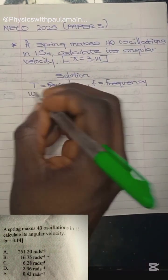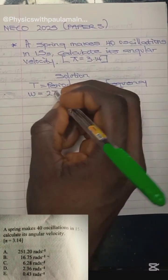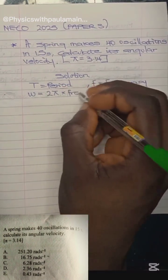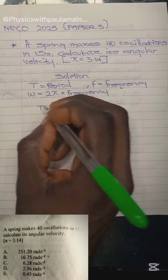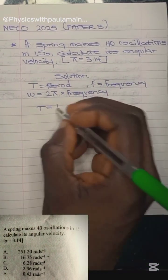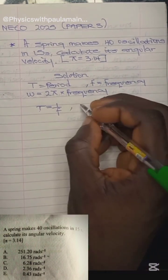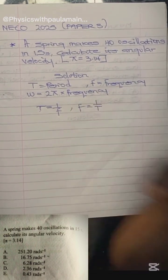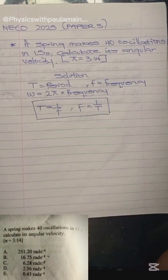Another formula is for angular velocity, given as 2π times the frequency. Do not forget that the period and frequency are reciprocals of themselves. If period equals 1 over f, then frequency equals 1 over period. These are basic formulas when dealing with simple harmonic motion.